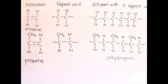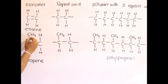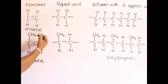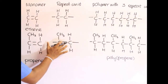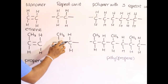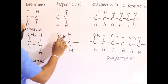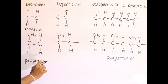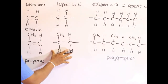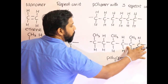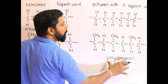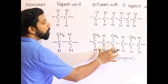To explain it again: the propene molecule is drawn with the CH₃ group placed on top of the first or second carbon atom. Then the structure is drawn again without the double bond, placing the two bonds at the two corners instead of the double bond, giving you the repeat unit of polypropene. Connect three of these parts to get your polypropene polymer with three repeat units.